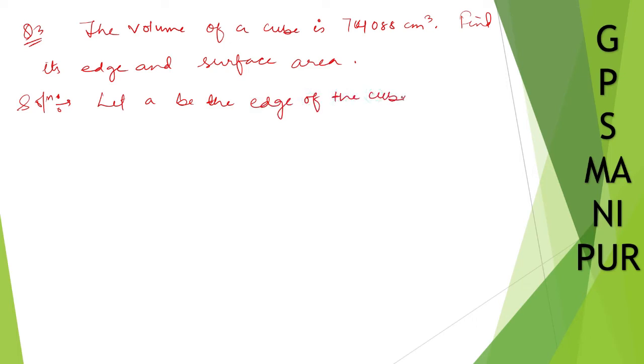Solution: Let a be the edge of the cube. Given that volume of a cube is equal to 74088 cm³. So volume of a cube formula is a³.